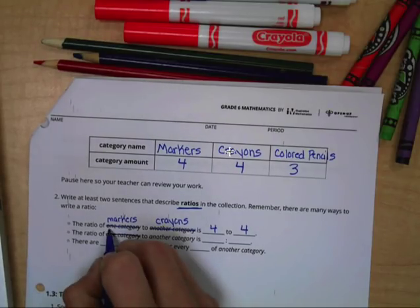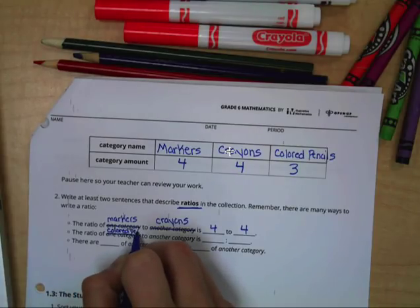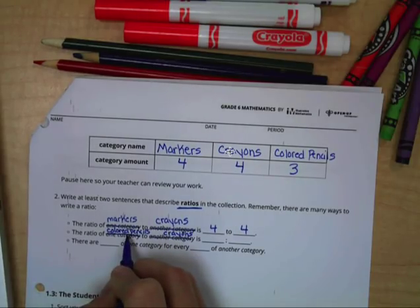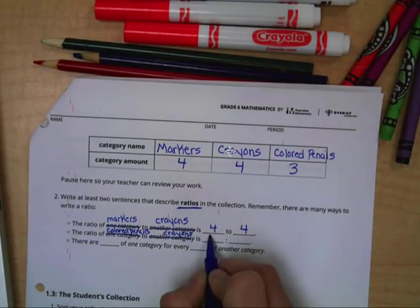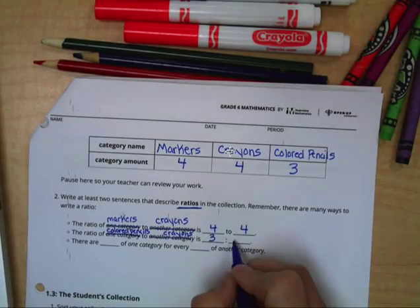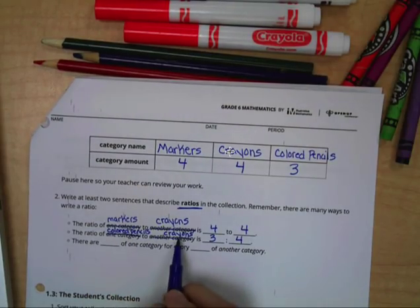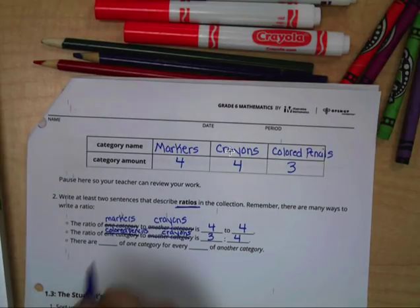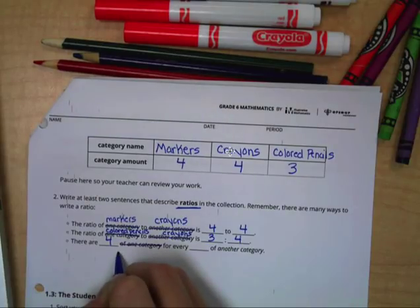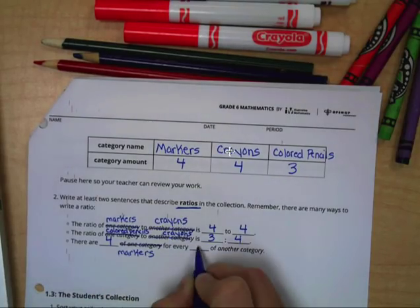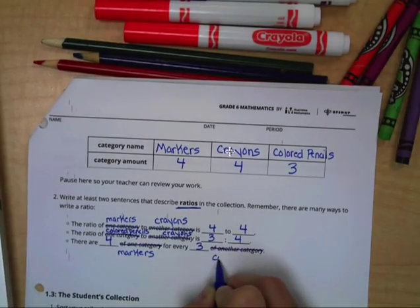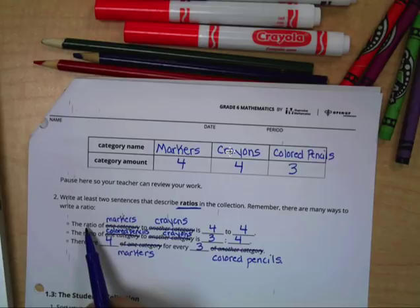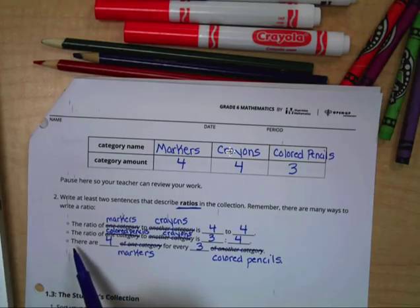And let's do another example. Let's say the ratio of colored pencils to crayons. So colored pencils comes first in our sentence. So it's going to be the first number in our ratio, which is three. Crayons come second. So it is the second number in our ratio. So the ratio of colored pencils to crayons is three to four. And there's one more way that you can write a ratio. So we can say there are four markers for every three colored pencils.